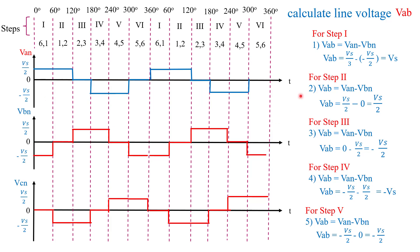For step 2: VAB equals VAN minus VBN. From the waveform, VAN equals Vs/2 and VBN equals 0. Substituting both values, VAB equals Vs/2 minus 0, which gives Vs/2. For step 3: VAN minus VBN. From the waveform, VAN is 0 and VBN is Vs/2. So VAB equals 0 minus Vs/2, which gives minus Vs/2.